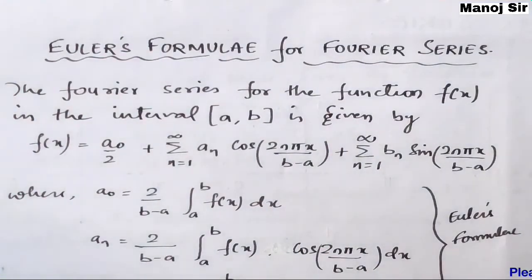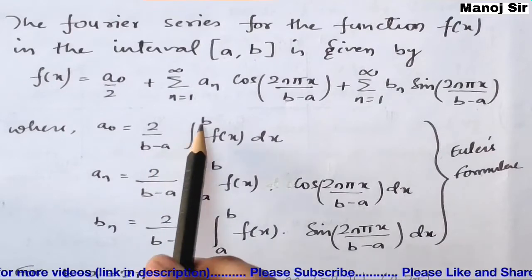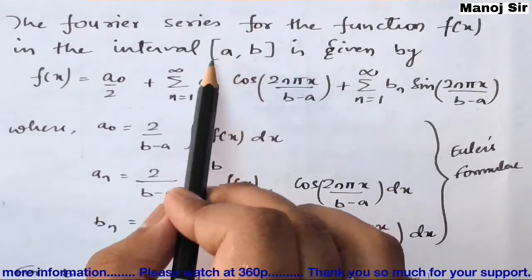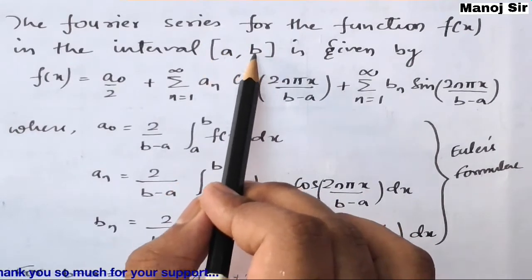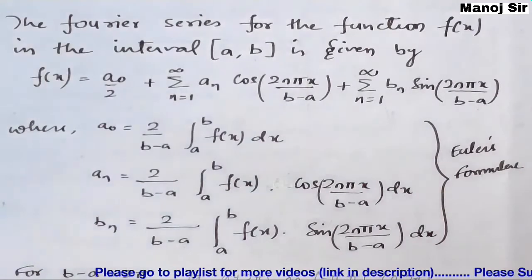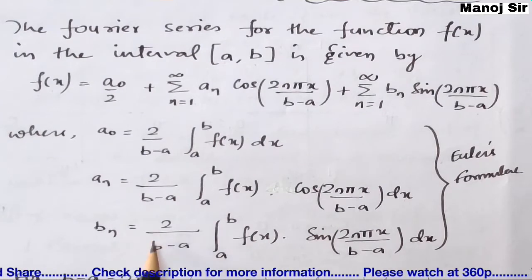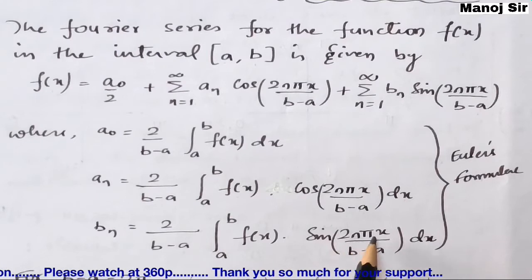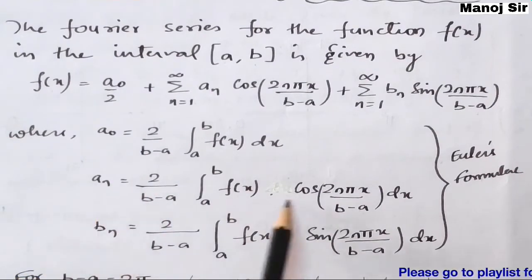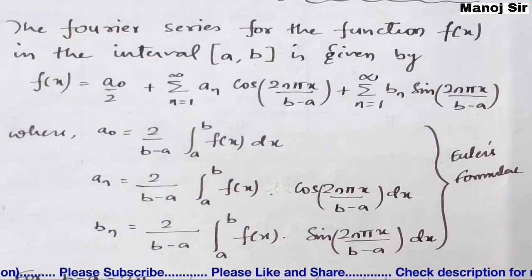The formula for a₀ is: 2/(b-a) · ∫ from a to b of f(x) dx, where (a, b) is the interval. The formula for aₙ is: 2/(b-a) · ∫ from a to b of f(x) cos(2nπx / (b-a)) dx. The formula for bₙ is: 2/(b-a) · ∫ from a to b of f(x) sin(2nπx / (b-a)) dx. These three formulas are known as Euler's formulas.